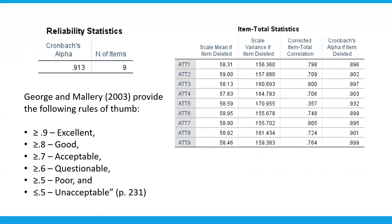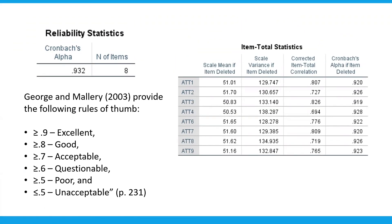We will interpret the values based on the rules of thumb provided by George and Mallory. Cronbach's alpha above 0.9 is considered excellent. For the attitude dimension, we have a value of 0.932, which is considered very good. We will keep all the items in this dimension because deletion of any items will result in a lower Cronbach's alpha value. But if you have Cronbach's alpha values below 0.7, which is questionable, poor, or unacceptable, then you can refer to the Cronbach's alpha if item deleted column. If you see that deletion of an item will result in a higher Cronbach's alpha, then you can delete the item and rerun the reliability analysis to see whether the value has improved.